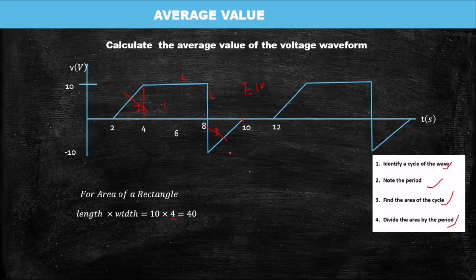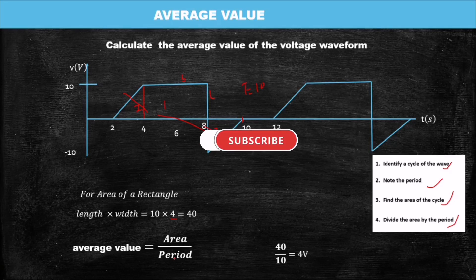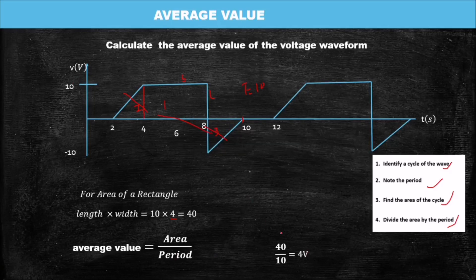Since the triangles cancel, we are done with the area. The area of the cycle is 40. We divide by the period, which is ten seconds. The average value is area over period, which gives four volts. With the average value, you find the normal area of the waveform, divide by the period, and that gives you the average value. The unit is volts, but sometimes it can be current depending on what is given.